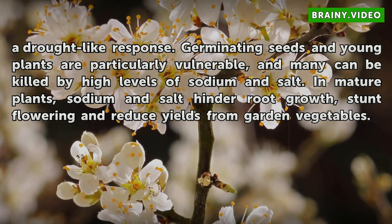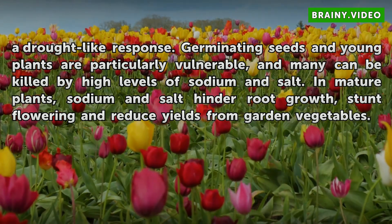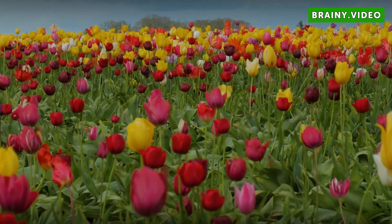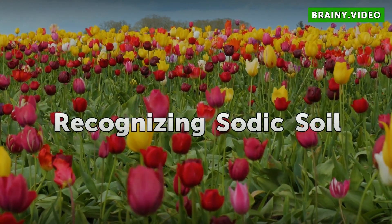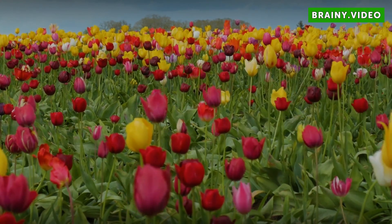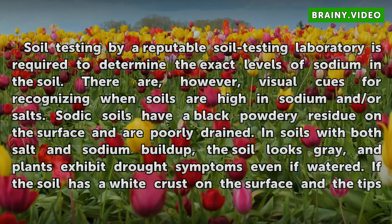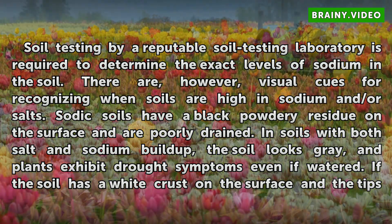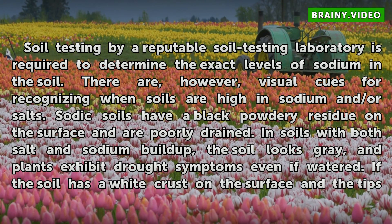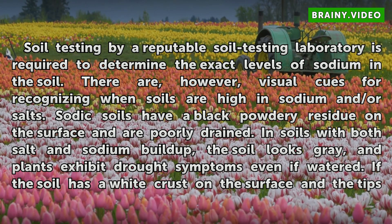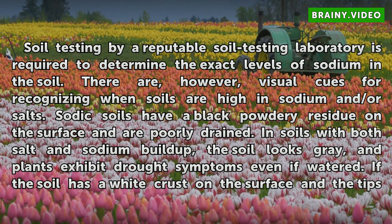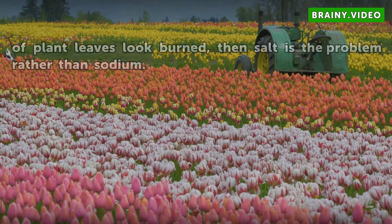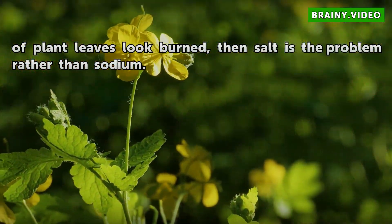In mature plants, sodium and salt inhibit root growth, stunt flowering, and reduce yields from garden vegetables. Soil testing by a reputable laboratory is required to determine the exact levels of sodium in the soil. There are, however, visual cues for recognizing when soils are high in sodium and/or salts. Sodic soils have a black powdery residue on the surface and are poorly drained. In soils with both salt and sodium buildup, the soil looks gray and plants exhibit drought symptoms even if watered. If the soil has a white crust on the surface and the tips of plant leaves look burned, then salt is the problem rather than sodium.